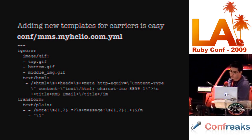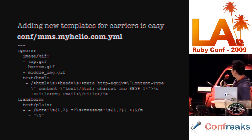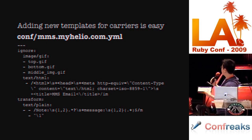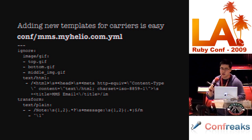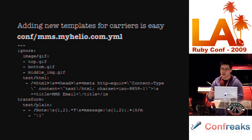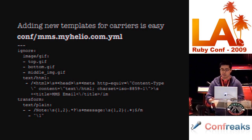Adding new carrier templates for MMS2R is easy. There are a bunch of templates for all the supported carriers. For example, here's the template for Helio — it specifies what images to ignore, what HTML to ignore, and what text to actually extract from the message as the intended body.